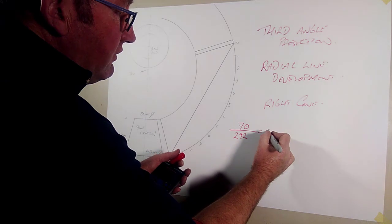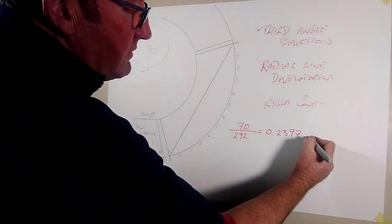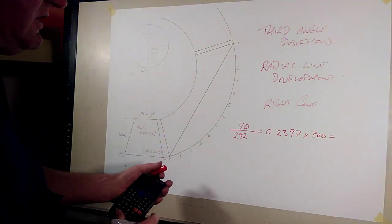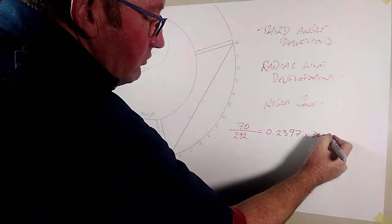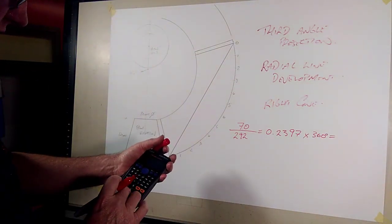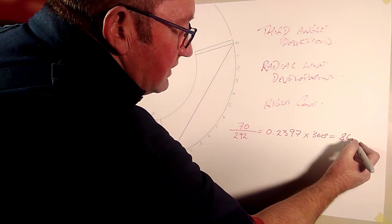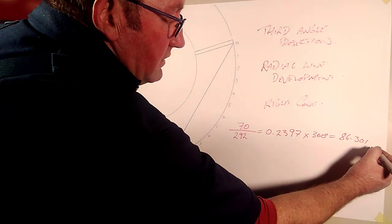I can then times that by 360 degrees, because there's 360 degrees in the full circle if we were to draw the full circle. So if I times that by 360, I get 86.301 degrees.